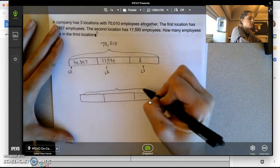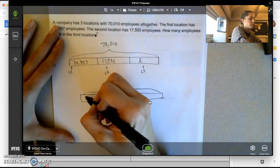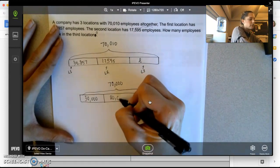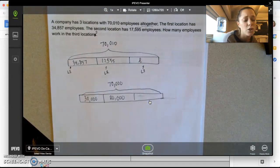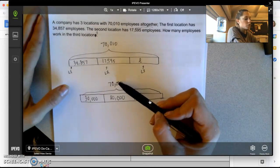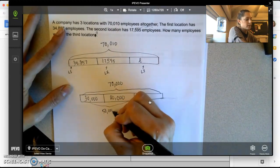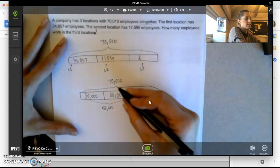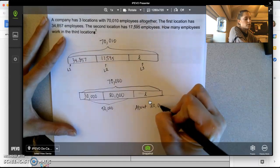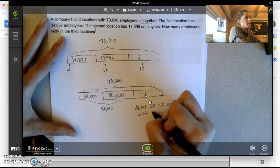So I'm going to start first. I know that 70,010 rounds to 70,000. I know 34,857 will round to 30,000 to the nearest ten thousand. And 17,595 will round to 20,000. If you need to do number lines to round, that's perfectly fine. And then this becomes mental math. I know that these two together are 50,000, these first two locations. And so if I subtract 70,000 and 50,000, I know there will be about 20,000 employees work at the third location.